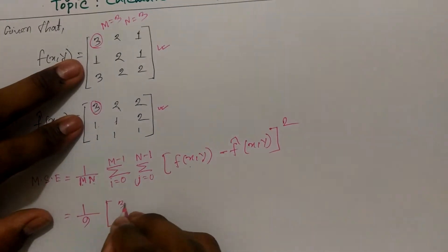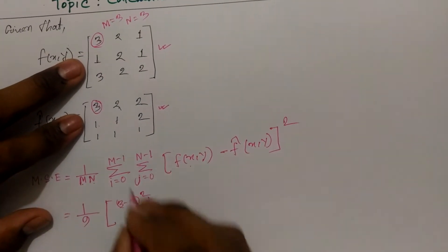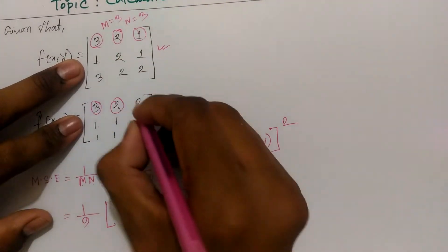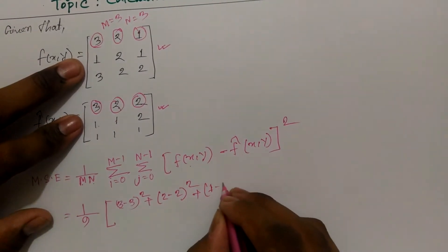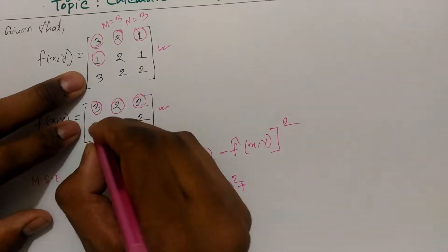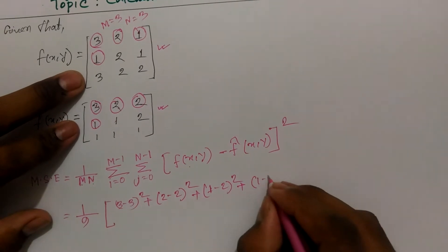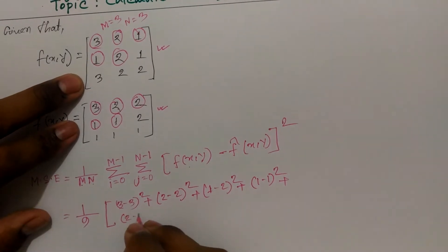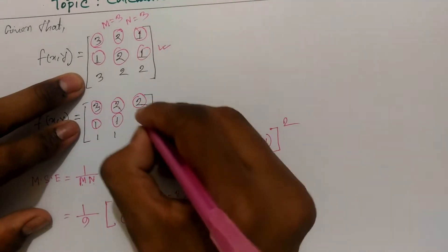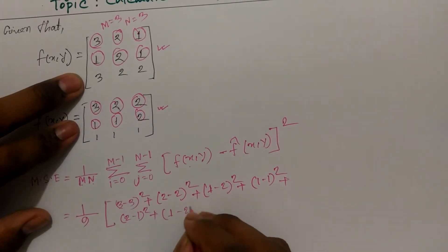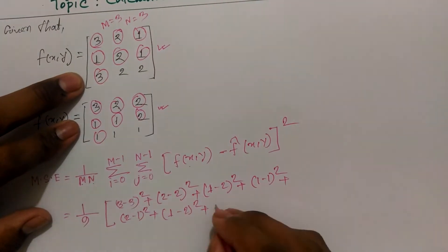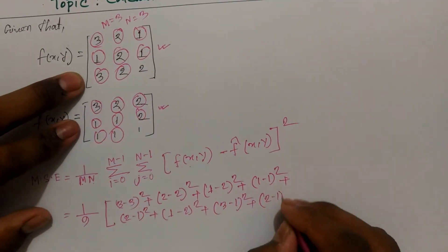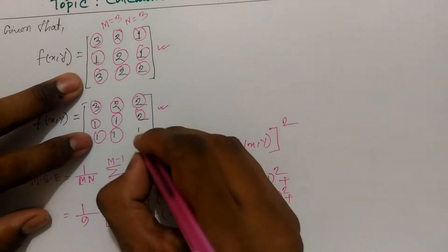Plus 2 minus 2, 2 minus 2, plus 1 minus 2, 1 minus 2, plus 1 minus 1, 1 minus 1, plus 2 minus 1, 2 minus 1, plus 1 minus 2, 1 minus 2, plus 3 minus 1, 2 minus 1, 2-1.